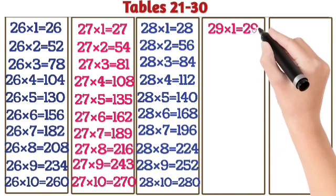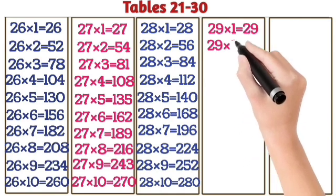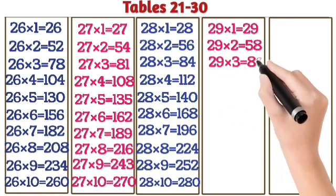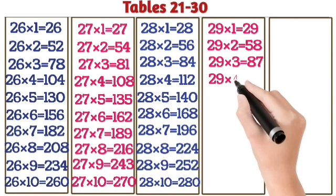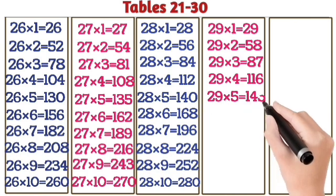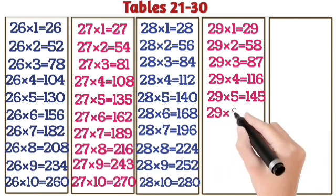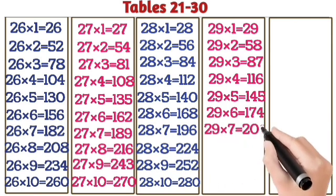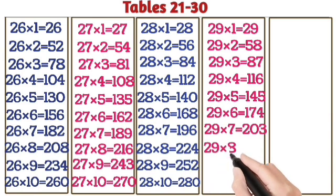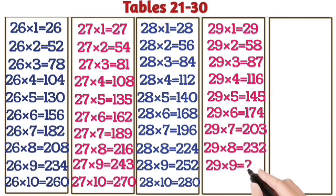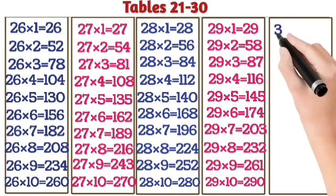29 ones are 29. 29 twos are 58. 29 threes are 87. 29 fours are 116. 29 fives are 145. 29 sixes are 174. 29 sevens are 203. 29 eights are 232. 29 nines are 261. 29 tens are 290.